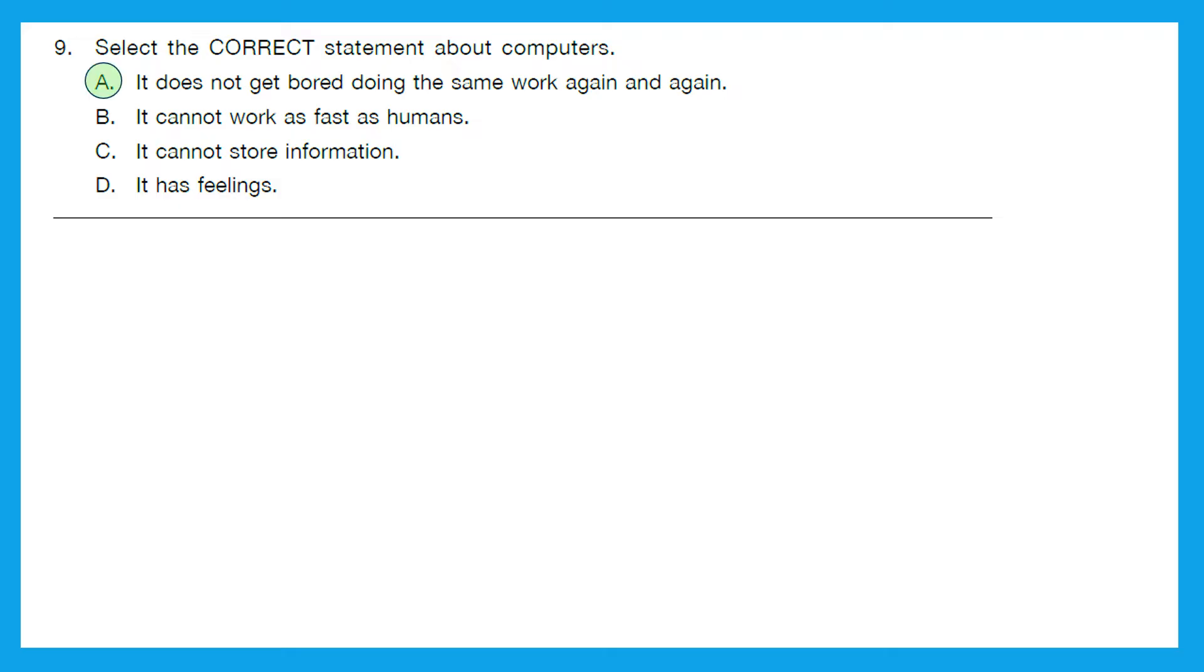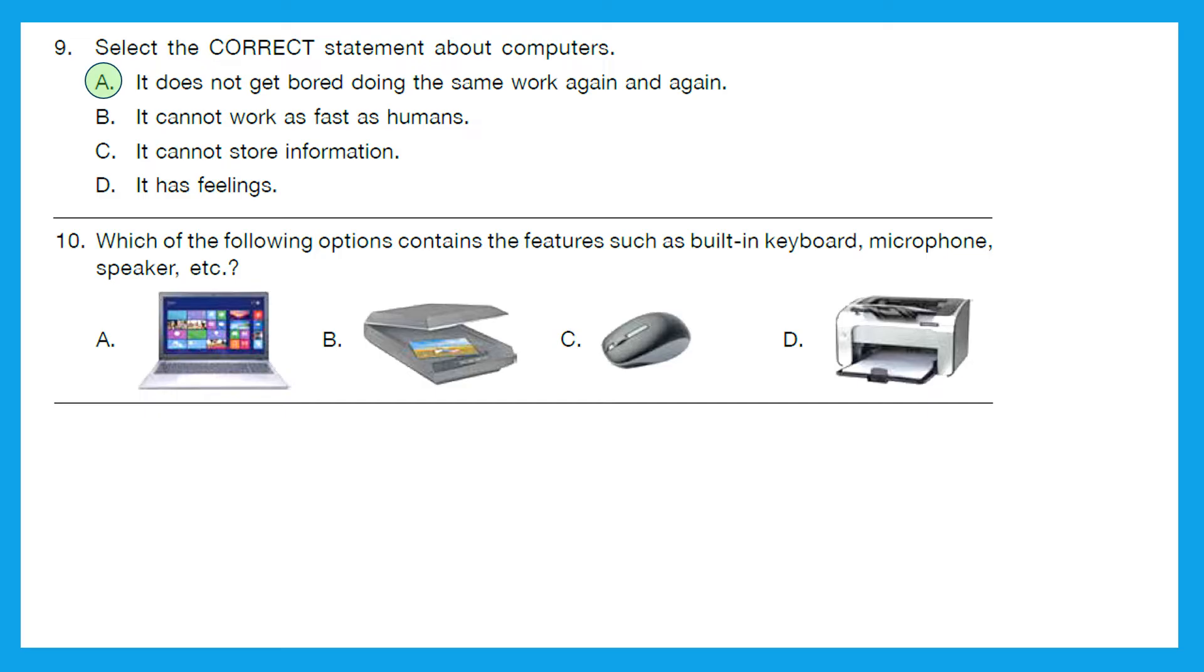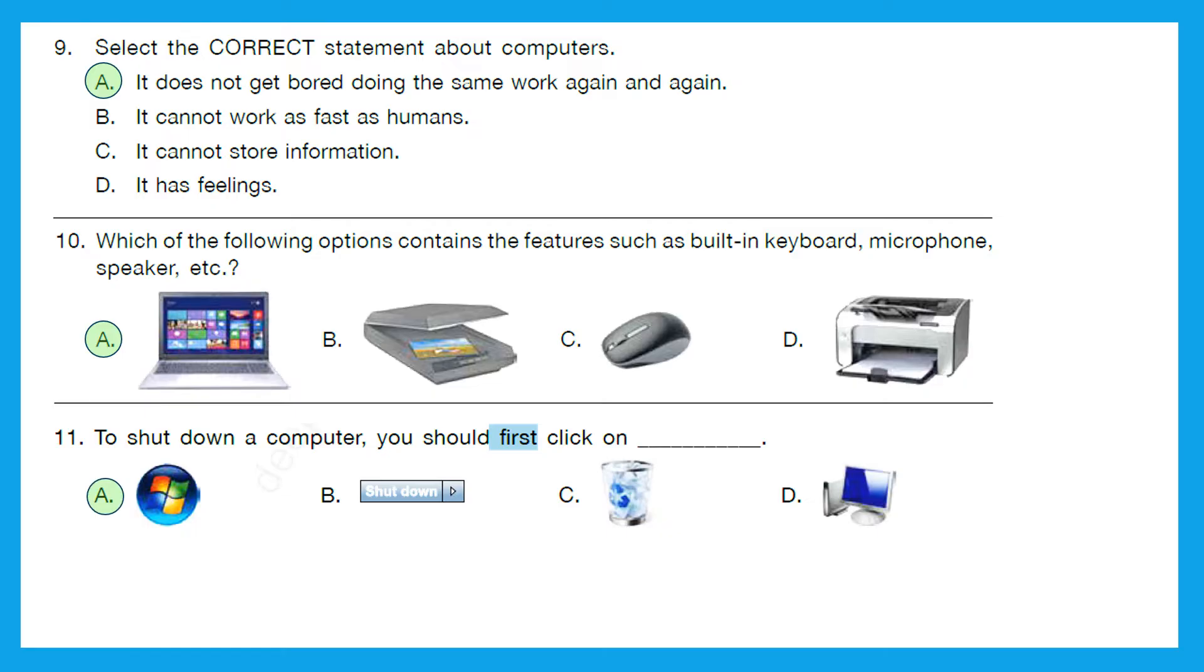Question 10: Which of the following options contains the features such as built-in keyboard, microphone, speaker, etc.? And the obvious answer is a laptop, option A. Question 11: To shut down a computer, you should first click on which icon? The right answer is option A, that is the Start icon. B shutdown comes later, C recycle bin is to store all the deleted files, and D is the My Computer icon. So the right answer is option A, Start. First we click that and then we get all the option to shut down.